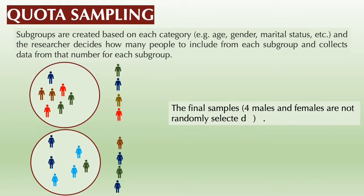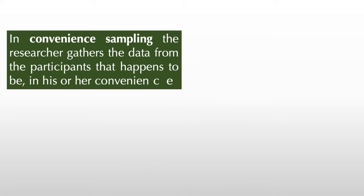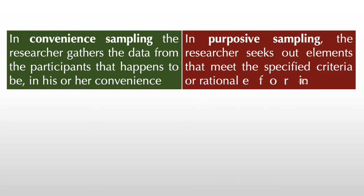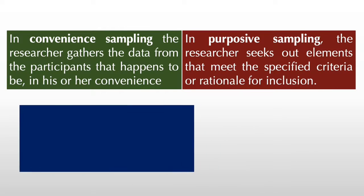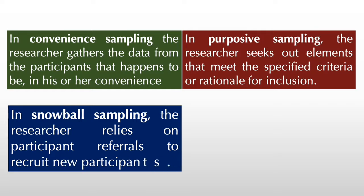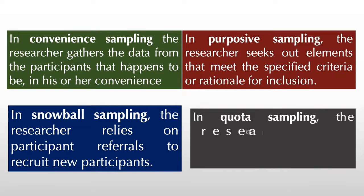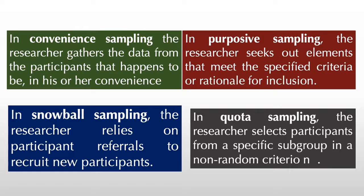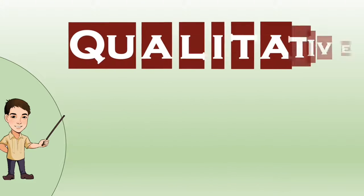Let us remember the four sampling techniques with these descriptions. In convenience sampling, the researcher gathers data from participants that happen to be available at his or her convenience. For purposive sampling, the researcher seeks out elements that meet specified criteria or rationale for inclusion. For snowball sampling, the researcher relies on participant referrals to recruit new participants. For quota sampling, the researcher selects participants from a specific subgroup using a non-random criterion. In this video, we learned the different qualitative sampling techniques.